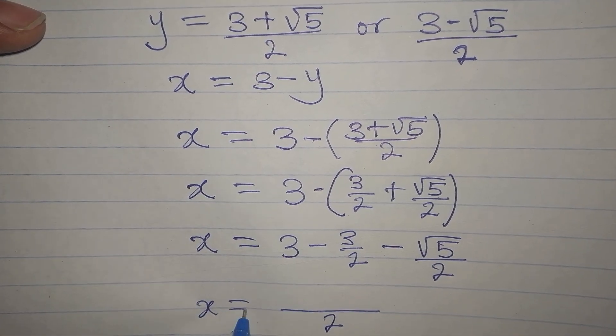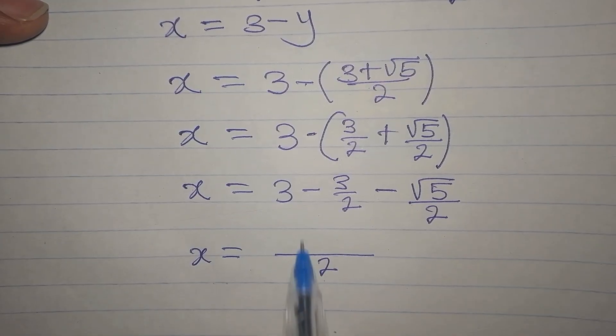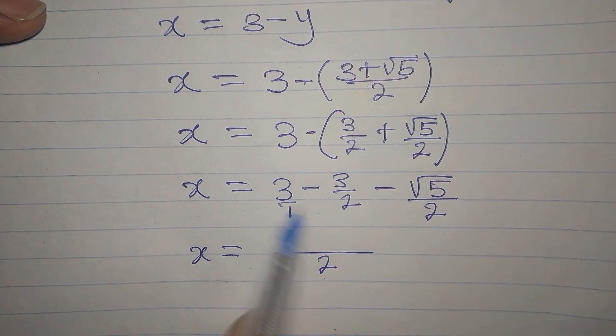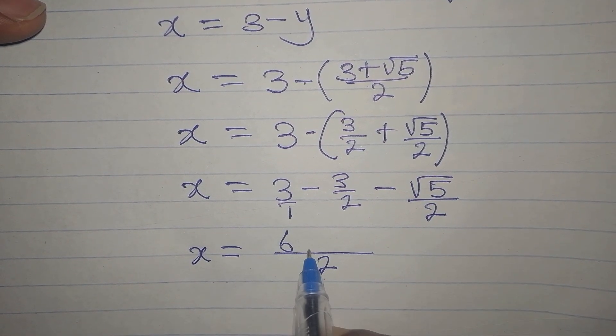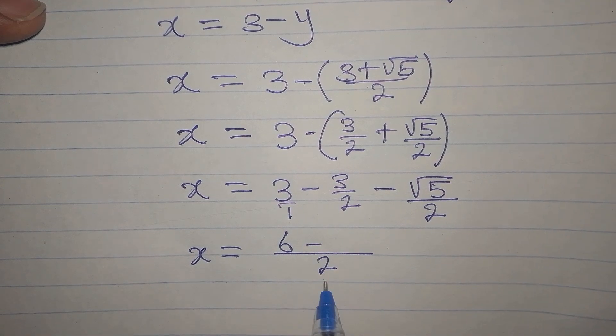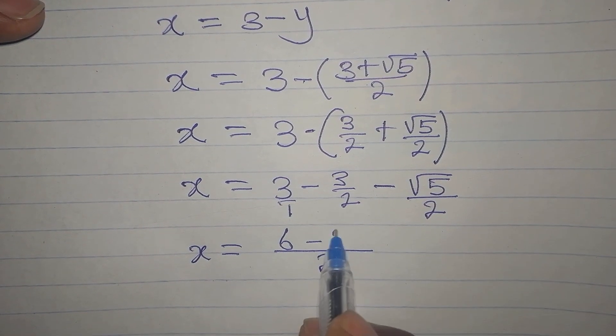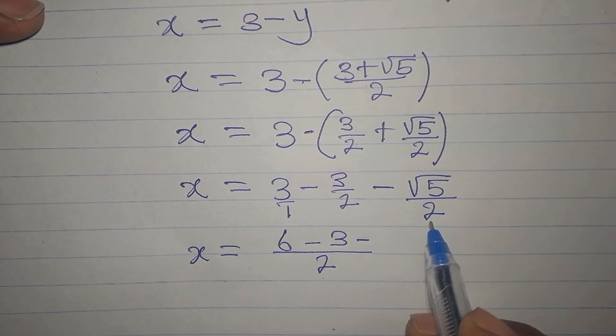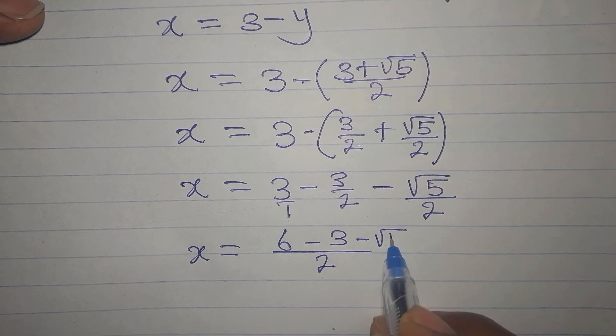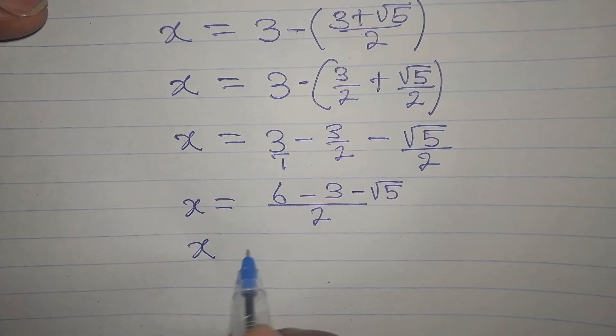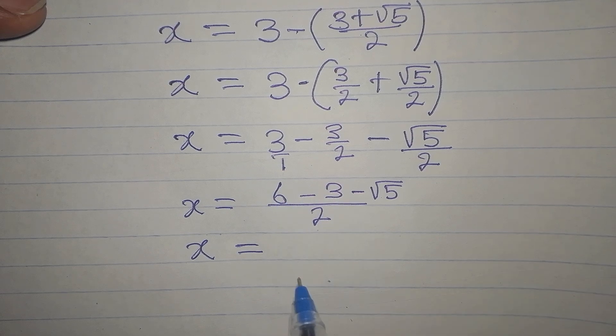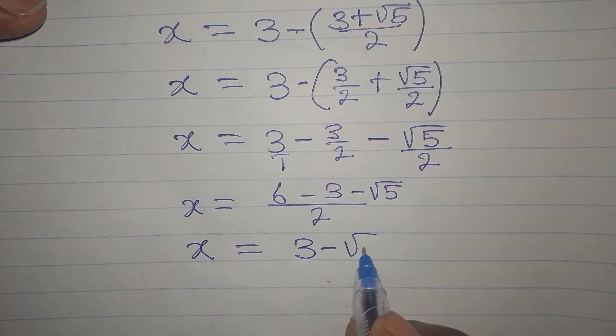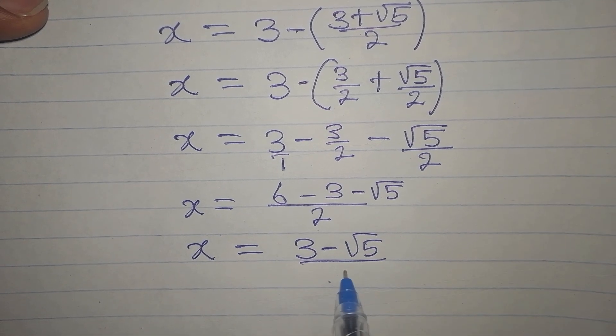Remember, x is already on its own. This could have been over 1. 2 divided by 1 is 2 times 3. That would be 6. Then minus 2 divided by 2 is 1 times 3. We have 3. Then minus 2 divided by 2 is 1 times root 5. That would be root 5. So now our x is equal to 6 minus 3 will give us 3 minus root 5. And this is over 2.